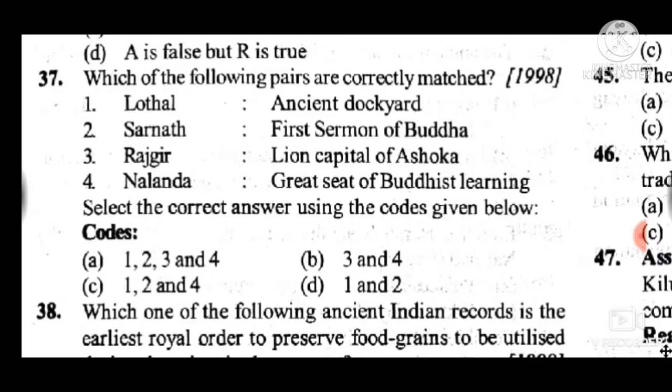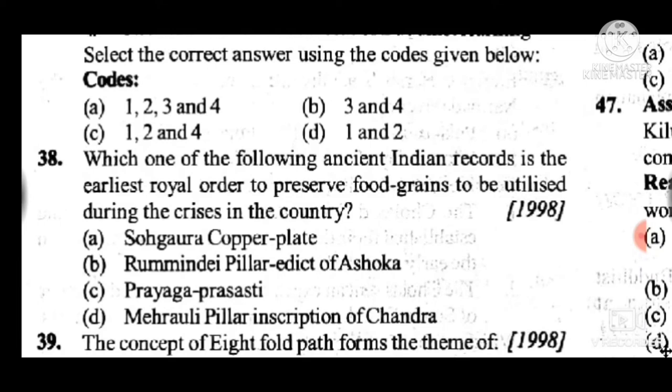Question 37: Which of the following pairs are correctly matched? Answer is C — one, two, and four: Lothal is an ancient dockyard, Sarnath is the site of the first sermon of the Buddha, and Nalanda was a great centre of Buddhist learning. Question 38: Which one of the following ancient Indian records is the earliest royal order to preserve food grains to be utilized during a crisis? Answer is A, Sohagaura copper plate.